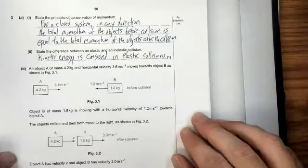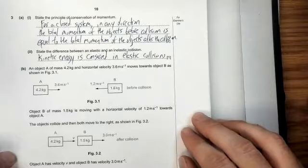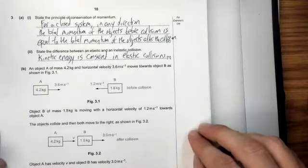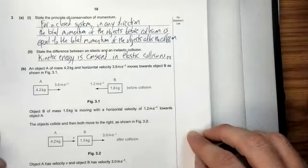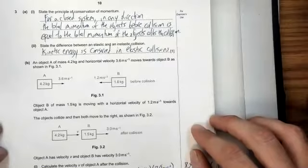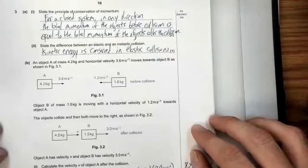All right, this one goes on to say, an object A of mass 4.2 kilograms and horizontal velocity 3.6 meters per second moves towards object B as shown in figure 3.1. Object B of mass 1.5 kilograms is moving with a horizontal velocity of 1.2 meters per second towards object A. The objects collide and then both move to the right as shown in figure 3.2.